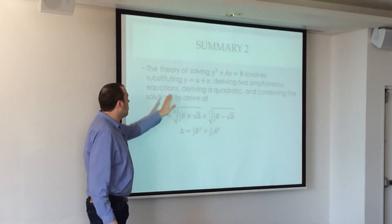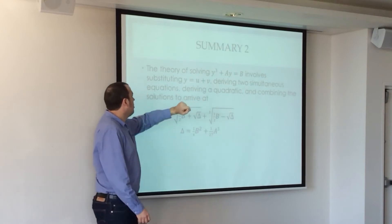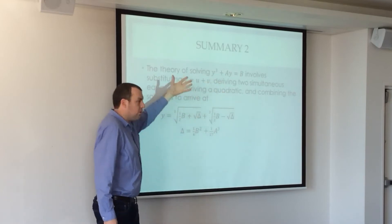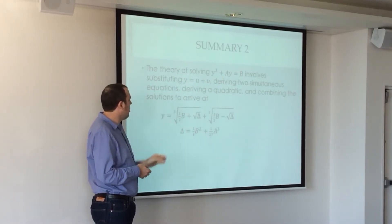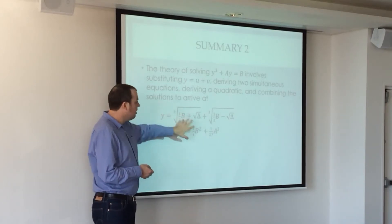The theory of solving the depressed cubic involves this substitution: y equals u plus v. So I'm just writing in terms of y here, because it's the context. y equals u plus v, deriving two simultaneous equations, deriving a quadratic, combining the two solutions of that quadratic to get here.